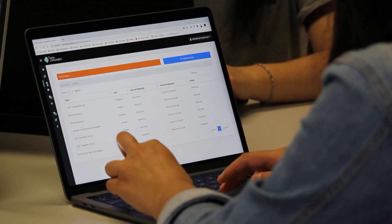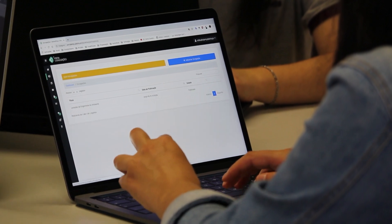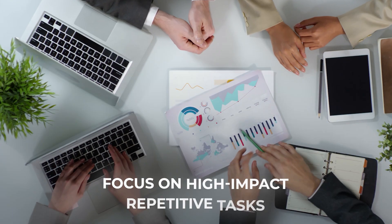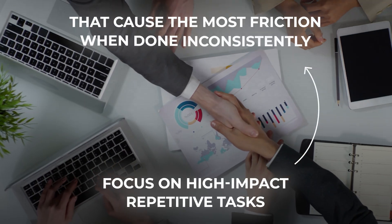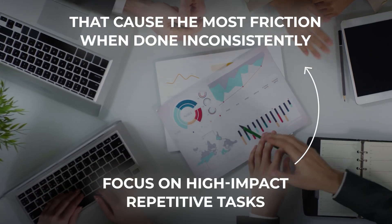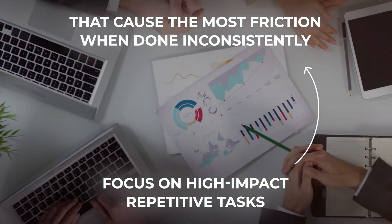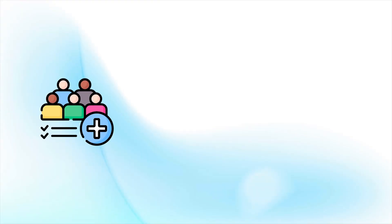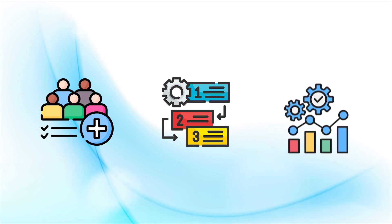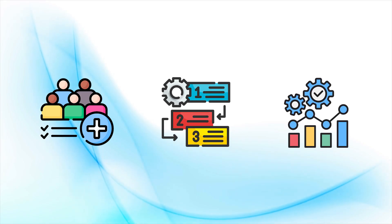The first step in writing process documentation is identifying the process you need to document. Focus on high-impact, repetitive tasks that cause the most friction when done inconsistently. Think about onboarding new employees, client workflows, or internal operations.